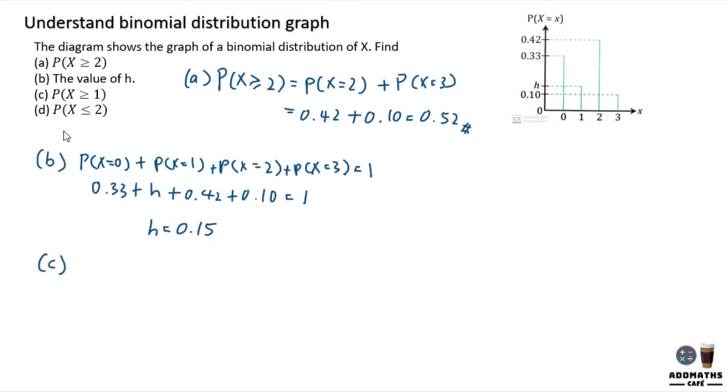For part C, if I'm required to find P(X > 1), it then can be using 1 minus P(X = 0), because it is not including 0. So 1 minus your 0, which is 0.33, and at the end,